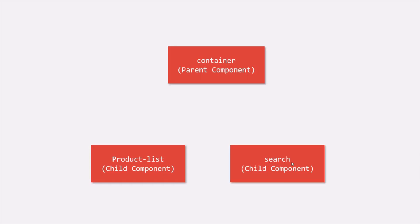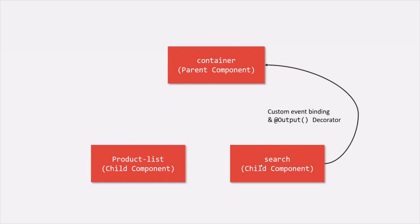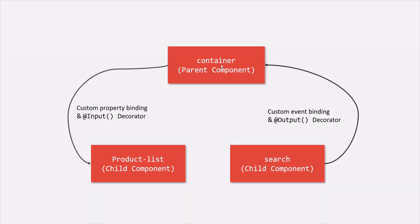Here we have our container component which is the parent component for both the product list and search components. What we want is to pass data from the search component to the product list component. To do that, first we use custom event binding to pass data from the search component to the container component. Then from the container component, we pass that data to the product list component using custom property binding and the @Input decorator. We could also use services, but we haven't talked about services yet, so let's use the concepts we already know.